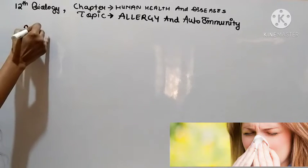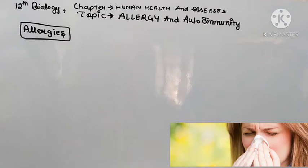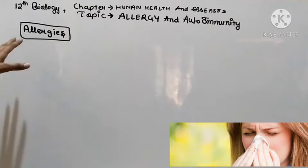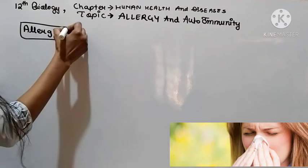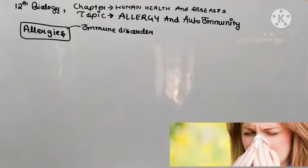First, our topic is allergies. This is the word which generally indicates the allergens. When we go to a new place, we feel some suffering — like sneezing, wheezing, and even tears in our eyes. These are all conditions which our body shows when we go somewhere where there are allergic reactants or antigens that our body does not support. But allergy is generally an immune disorder.